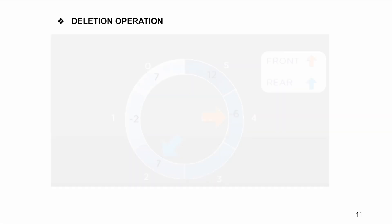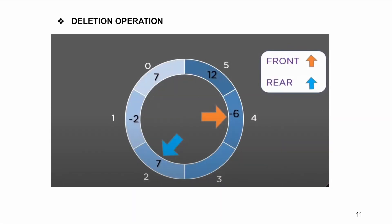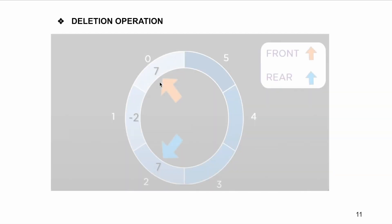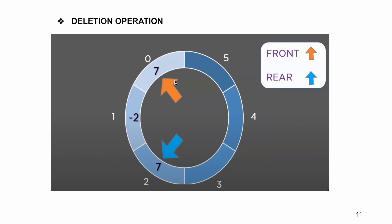Now let's talk about deletion operations. To delete an element using the front pointer, we increment the front pointer until it reaches the end of the dequeue. Once it reaches the max size, we use circular incrementation to bring the front pointer back to the beginning of the queue, and while this is being performed, elements are removed. As shown in the animation, the front pointer went from four to five, and once it reached max size, circular incrementation brought it to position zero.